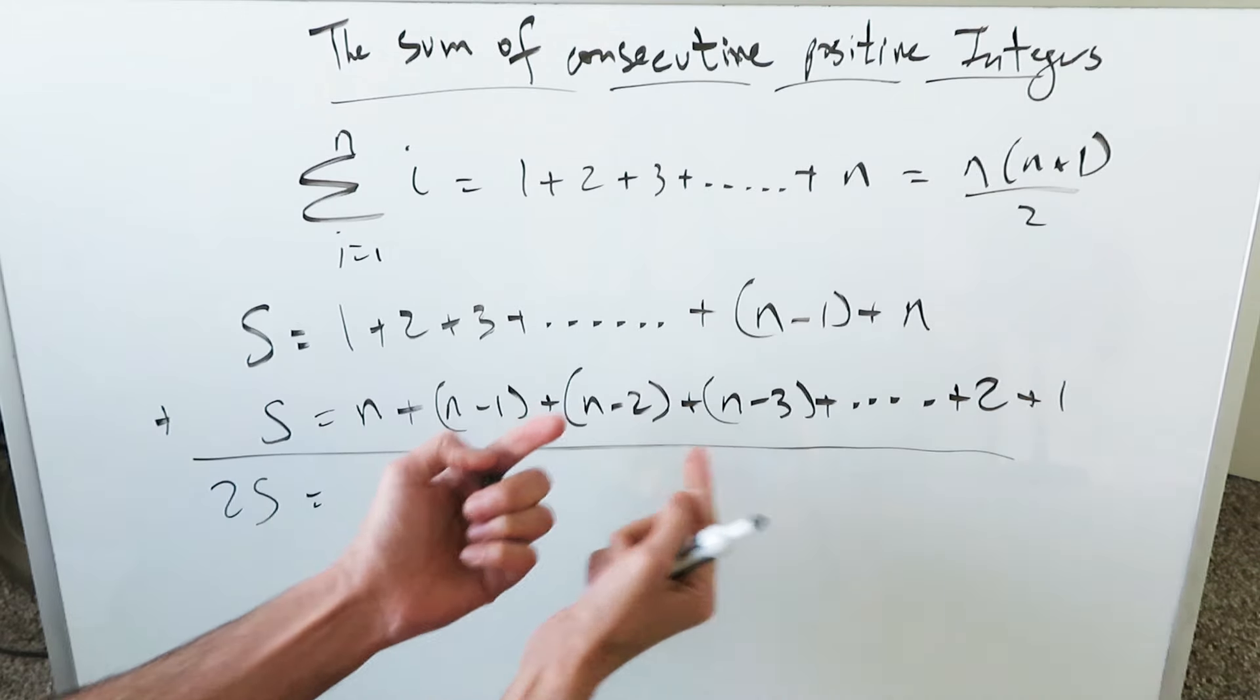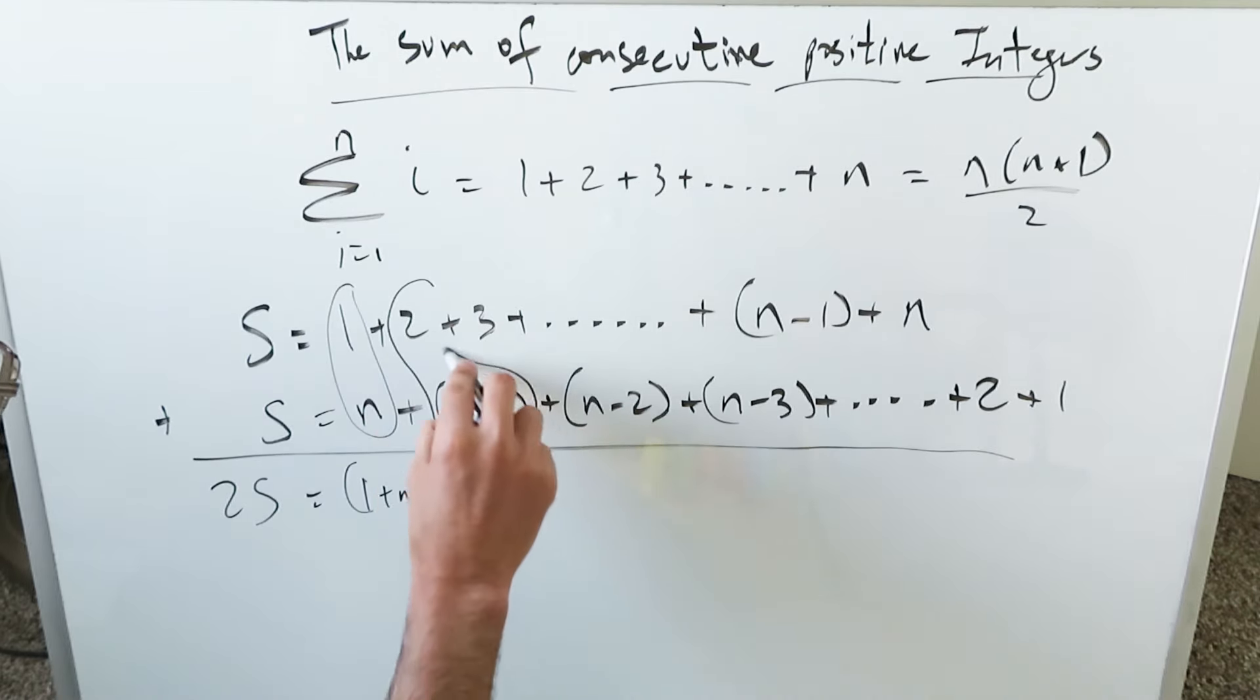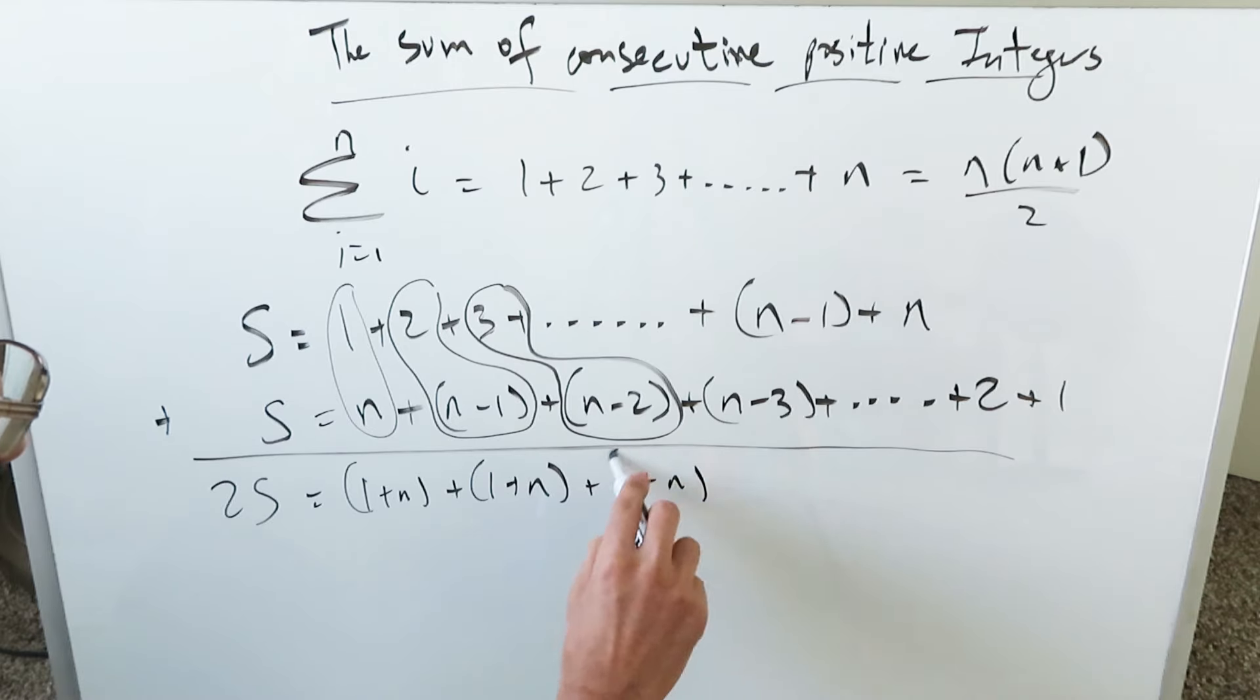You'll do a column by column addition. Here you're getting 1 and n. I'm looking at this, I'm getting 1 plus n. Here I'm looking at this column right over here: 2 plus n minus 1 is again 1 plus n. Then I'm looking at this column right over here. I'm looking at 3 plus n minus 2, which equals 1 plus n. In parentheses, keep that in mind.